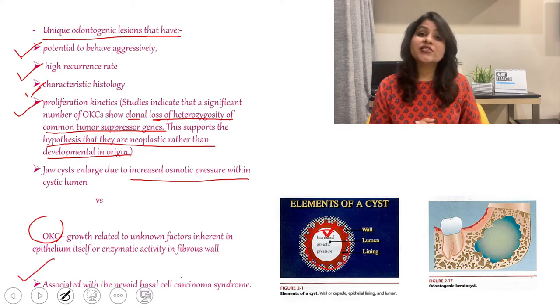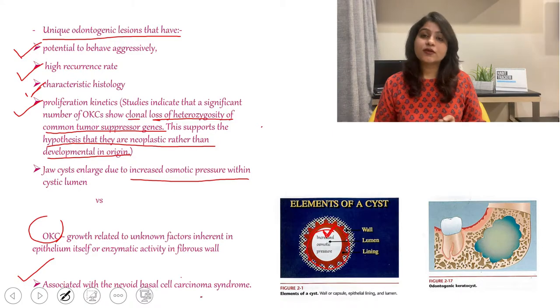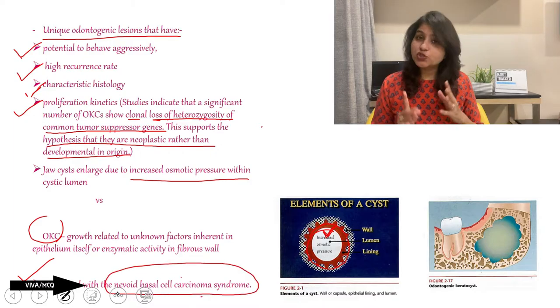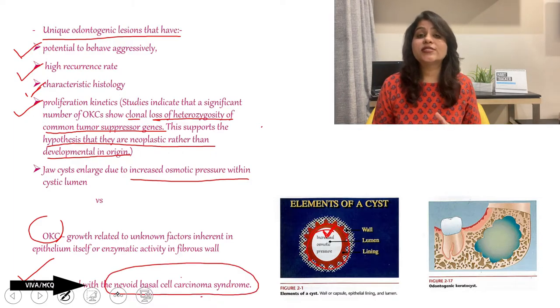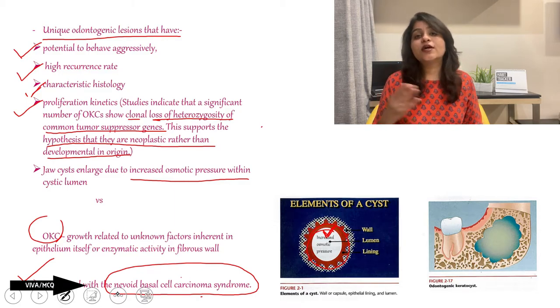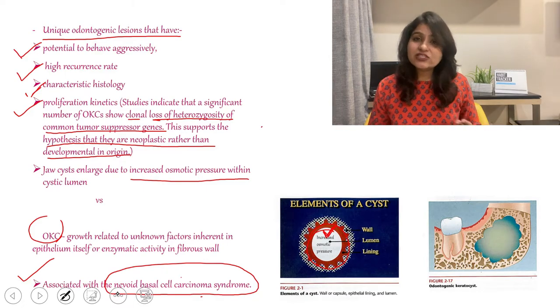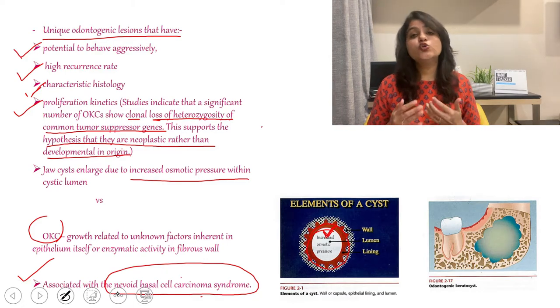OKC is also associated with a syndrome — nevoid basal cell carcinoma syndrome. This can be a viva question: OKC is seen associated with which syndrome? Remember, it is associated with nevoid basal cell carcinoma syndrome, also called Gorlin-Goltz syndrome or Gorlin syndrome. These features make OKC a unique lesion.